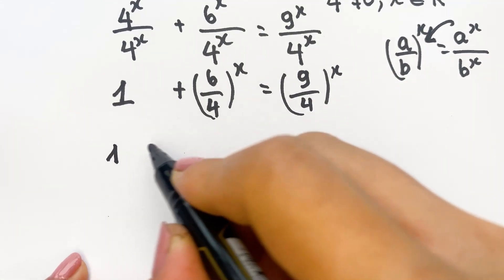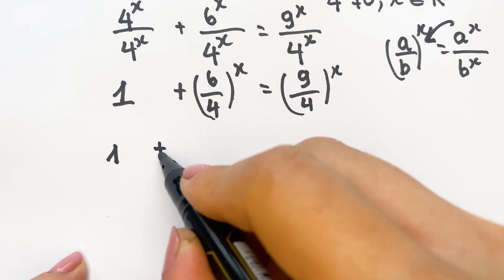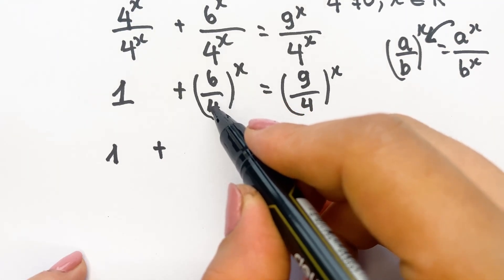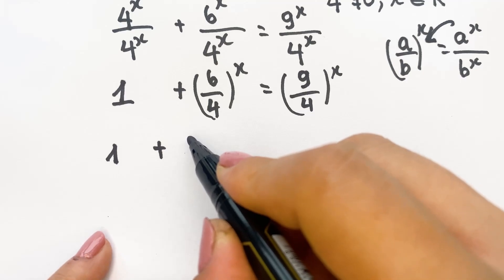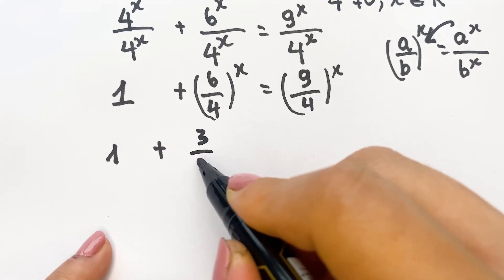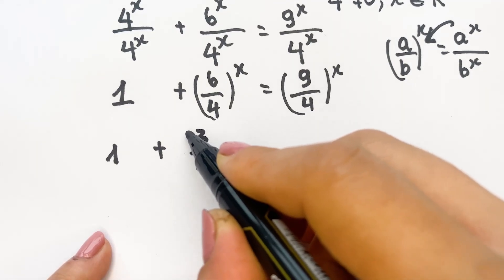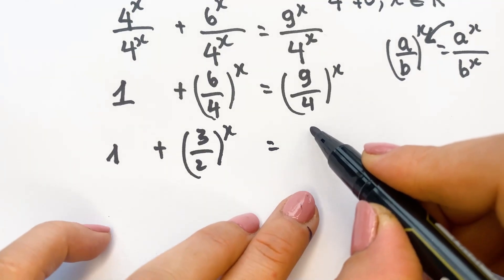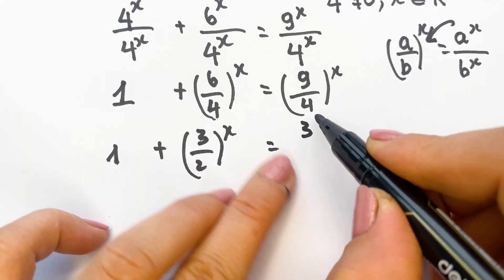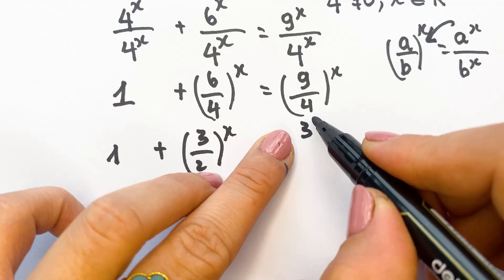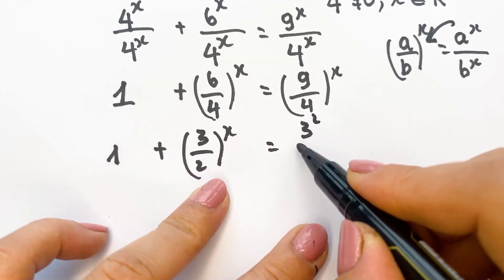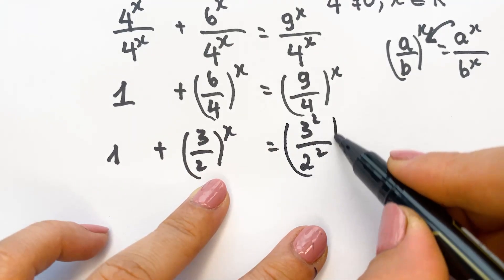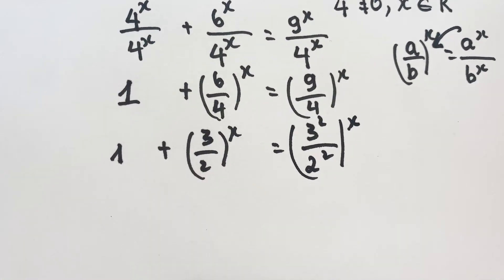And then, we can have 1 plus 6 over 4. You need to simplify by dividing both numerator and denominator by 2, giving 3 over 2, whole power x. And then, we can write 9 over 4 as 3 squared over 2 squared, whole power x.